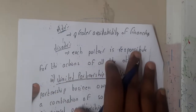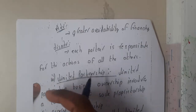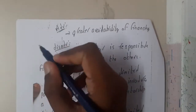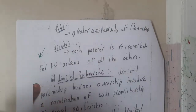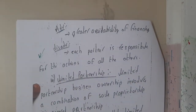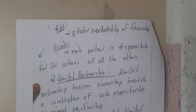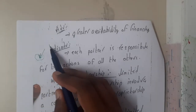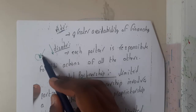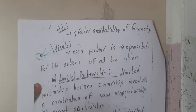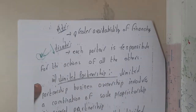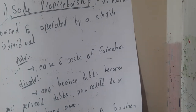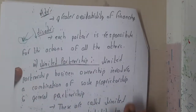The disadvantage of a partnership firm is that each partner is responsible for the actions of all the others. For example, if you have 10 members and one of them is making poor or aggressive decisions, and that leads to the whole company's loss, all the other nine members will be affected. This is the major disadvantage of a partnership firm.